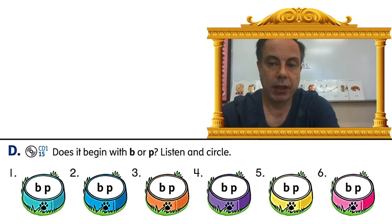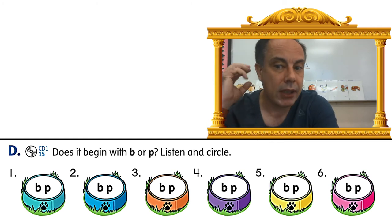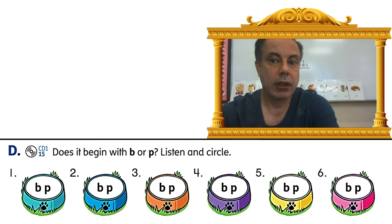Look at the bottom of the page, exercise D. You have to listen and circle: does it begin with B or P? Listen and say, circle the letter. Okay, so let's do number one. Please circle B or P.